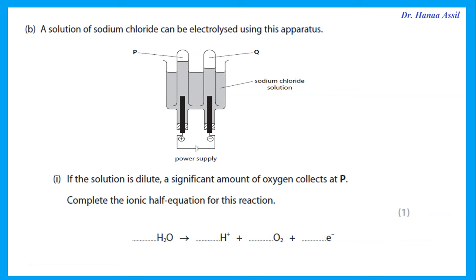A solution of sodium chloride is electrolyzed. When dilute, a significant amount of oxygen collects at electrode P. Complete the ionic half-equation: after the arrow there are two oxygens, so two water molecules go before the arrow. That gives four hydrogens, so add 4H⁺; then balance charge with 4e⁻. The balanced half-equation is: 2H₂O → O₂ + 4H⁺ + 4e⁻.